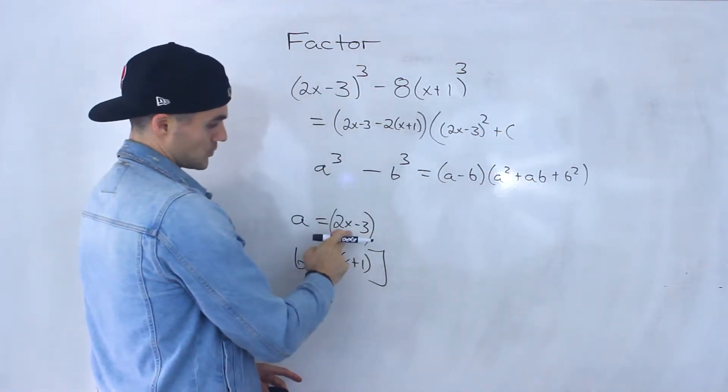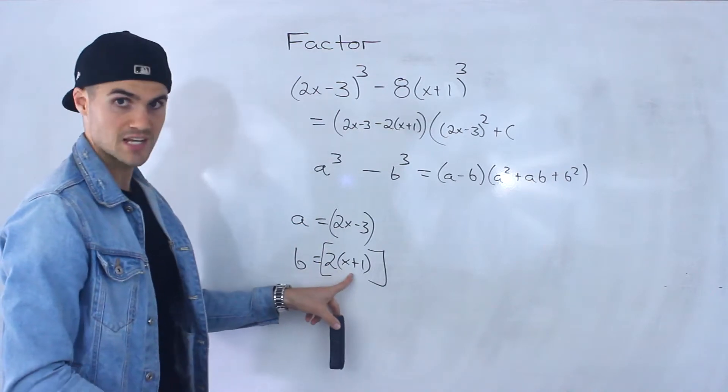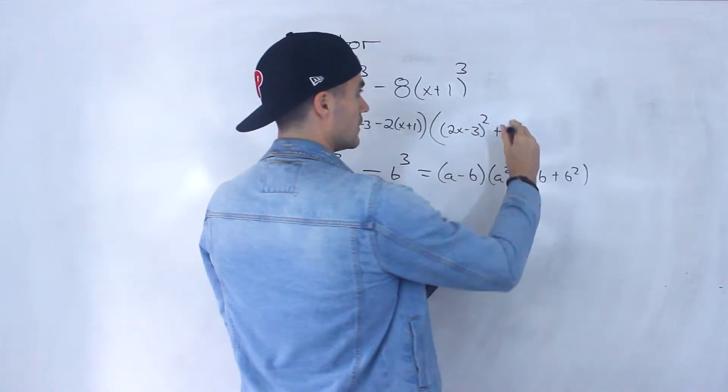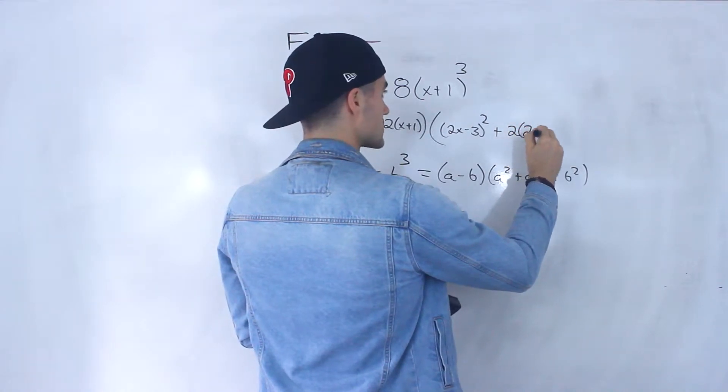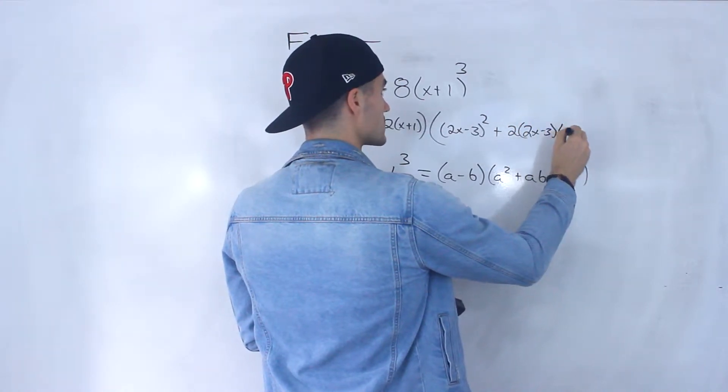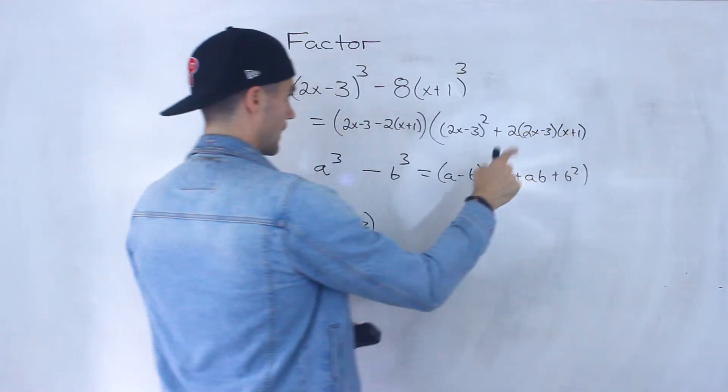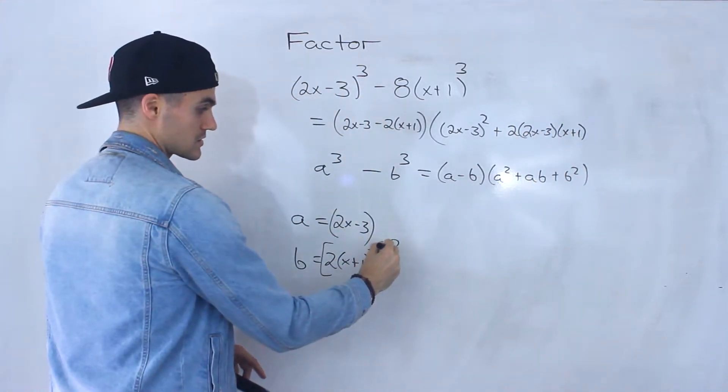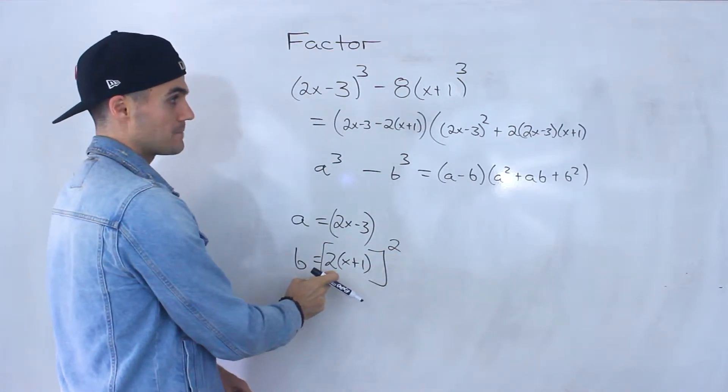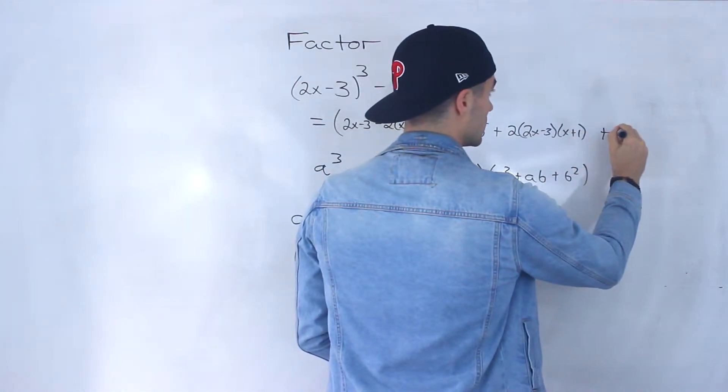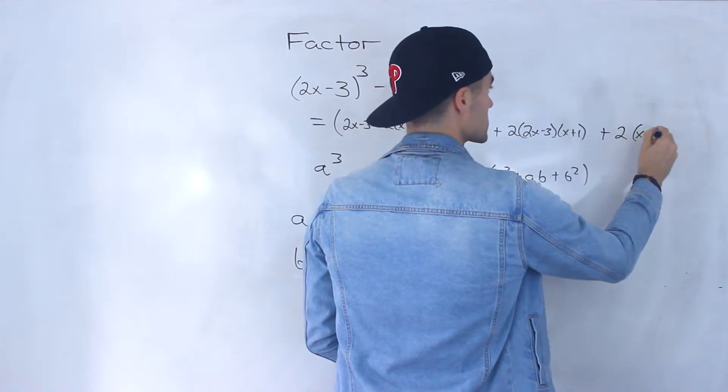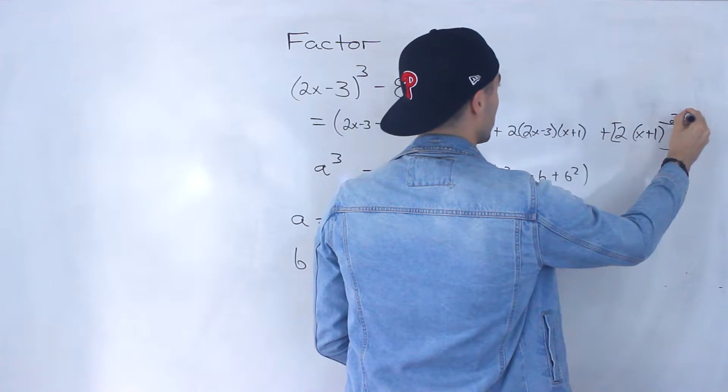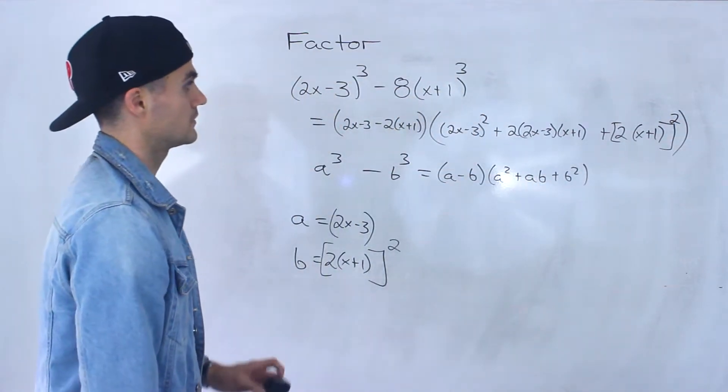So we'd have (2x-3) times 2 times (x+1). So I'm going to take this 2 and put it in front, and then I'll have 2(2x-3)(x+1). And then plus b squared, so you take this entire expression and square it, including that 2. Be careful with that. So you would take 2(x+1), I'm going to throw that in square brackets and square that whole thing. And we're going to close that big bracket right there.